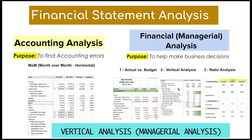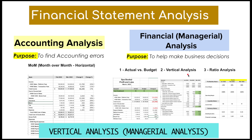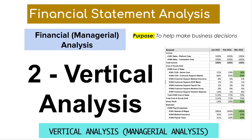Let's talk about vertical analysis. We said horizontal goes left to right comparing period over period. With vertical, we go top to bottom — that's why it's called vertical. You're comparing items on the income statement to one fixed item, such as revenue, most commonly, and then looking at whether those expenses as a percentage of revenue are trending up or down over time.